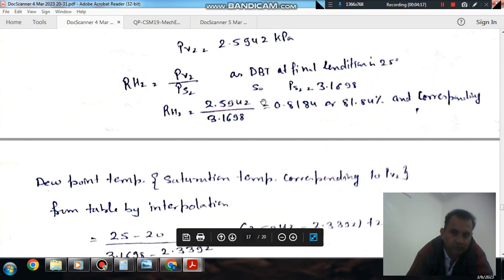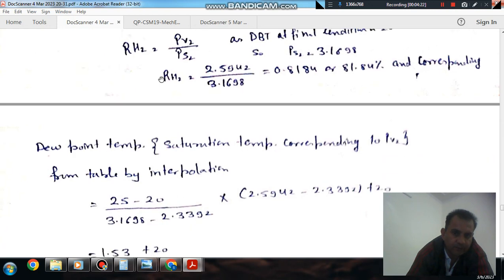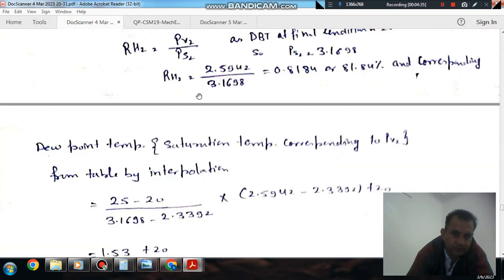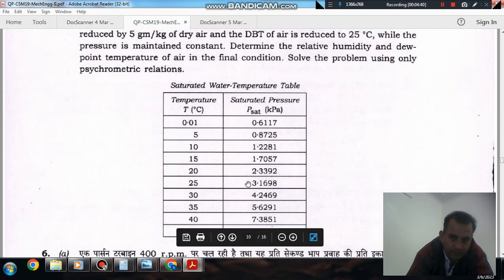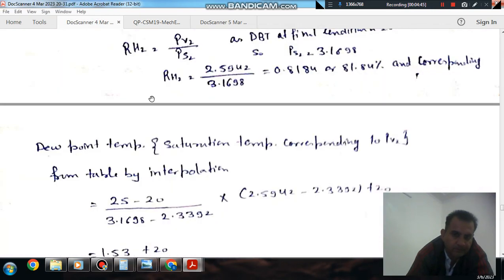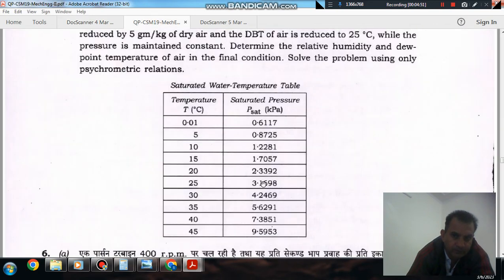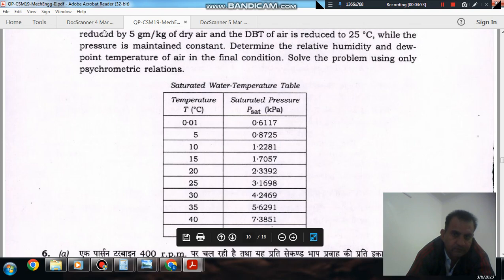And corresponding to this PV2, 2.594 kPa, you can find out dew point temperature. So, as in the table, the dew point for this pressure PV2 is 2.59, so it is lying between 20 and 25 degrees. So by interpolation, the difference of temperature is 5 and the difference of saturation pressure is this much.